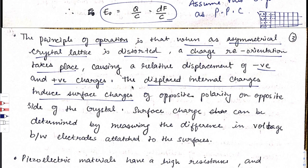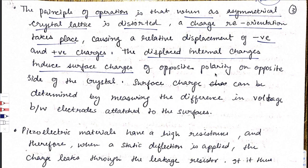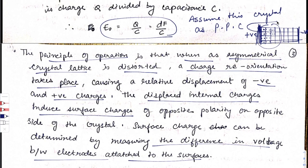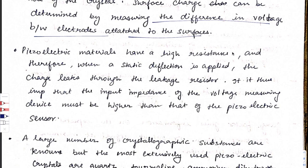The surface charge can be determined by measuring the difference in voltage between electrodes attached to the crystal surfaces, using a voltmeter. Piezoelectric materials have high resistance, and when a static deflection is applied, the charge leaks through the leakage resistor. Therefore, the input impedance of the voltage measuring device must be higher than the piezoelectric sensor to avoid charge leakage.